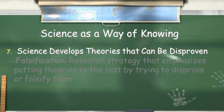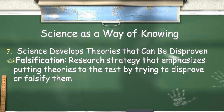Science develops theories that can be disproven. Falsification is a research strategy that emphasizes putting theories to the test by trying to disprove them, and sometimes that is the easiest way to prove it - by trying to disprove it.